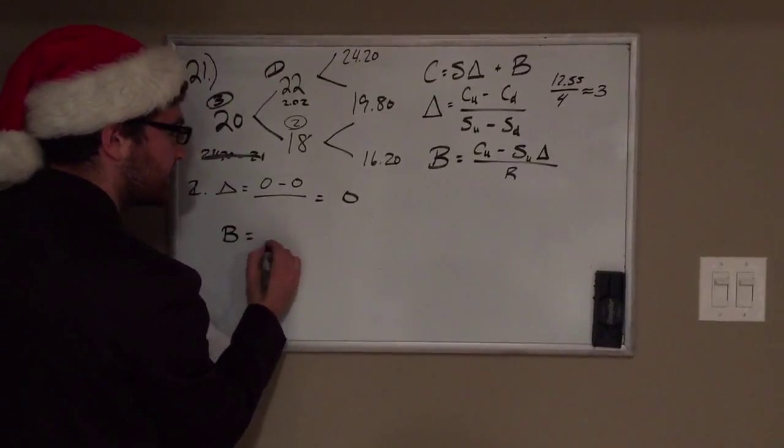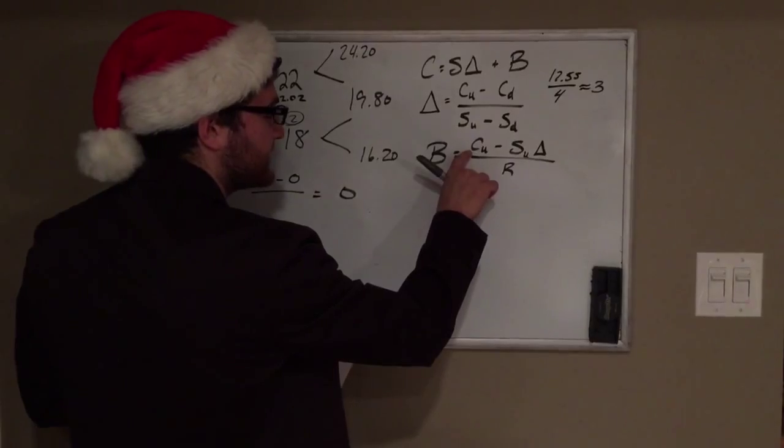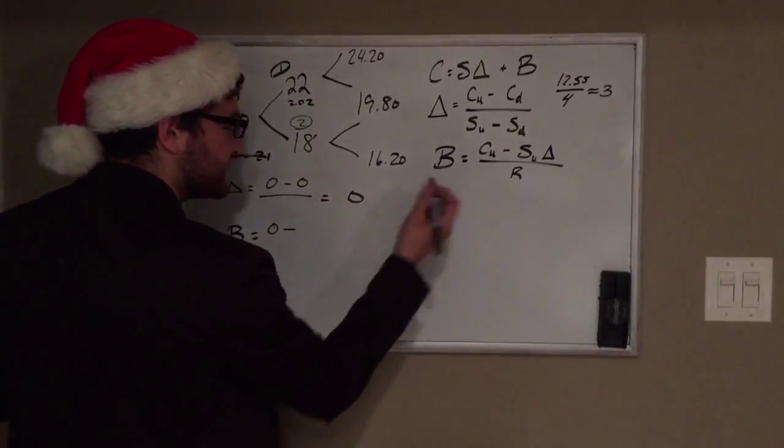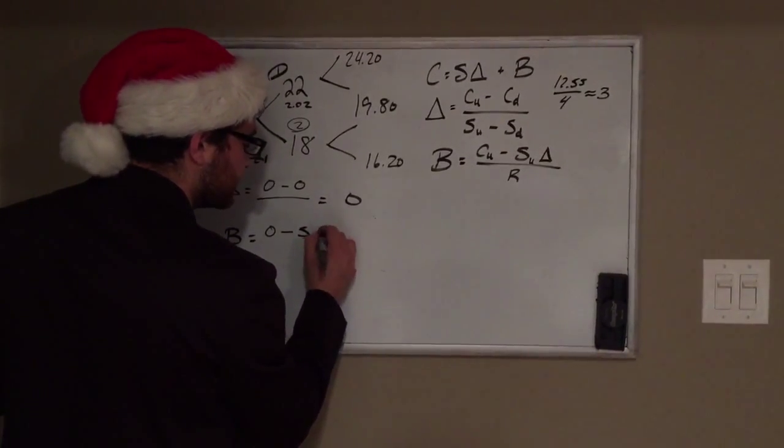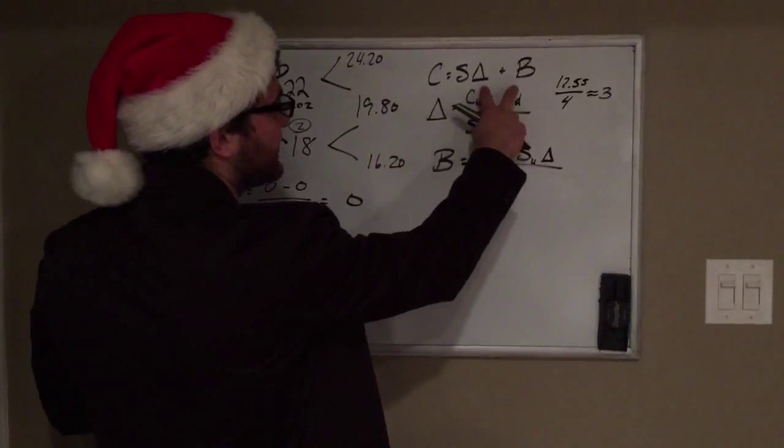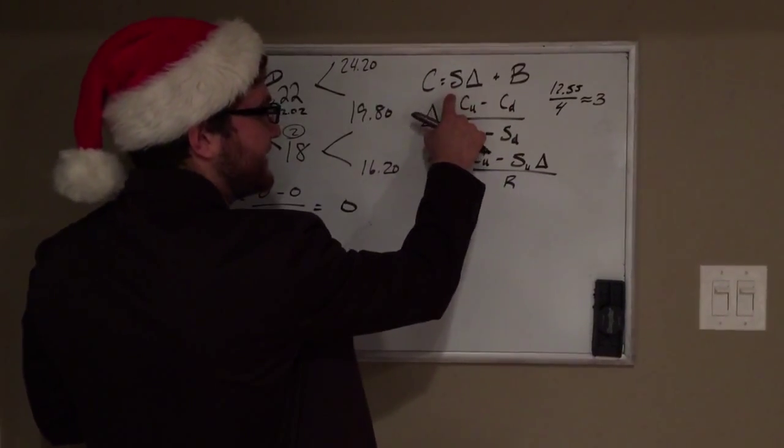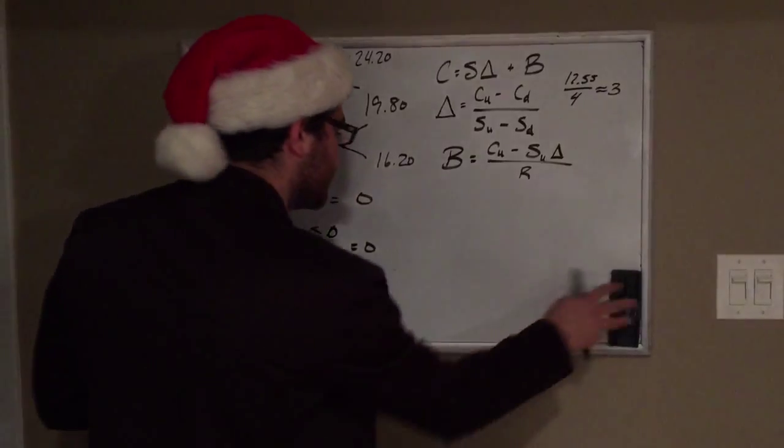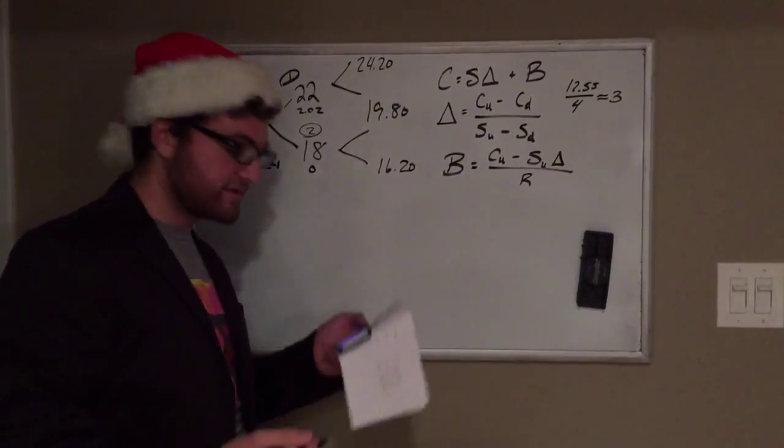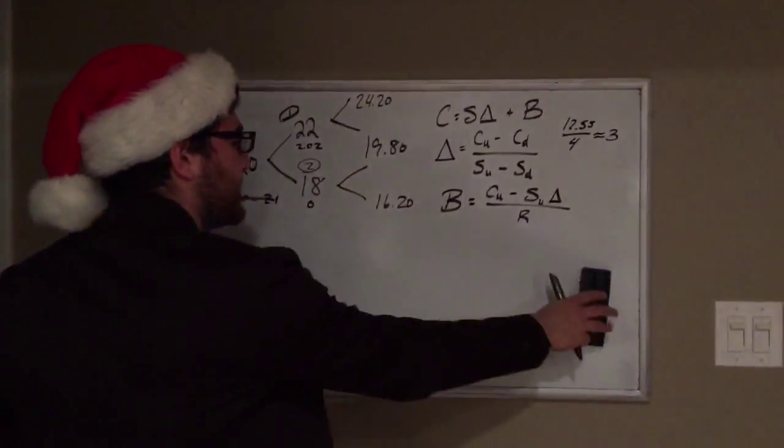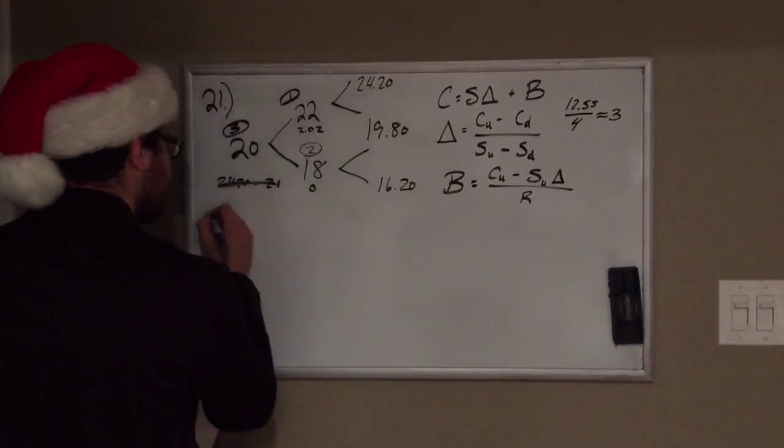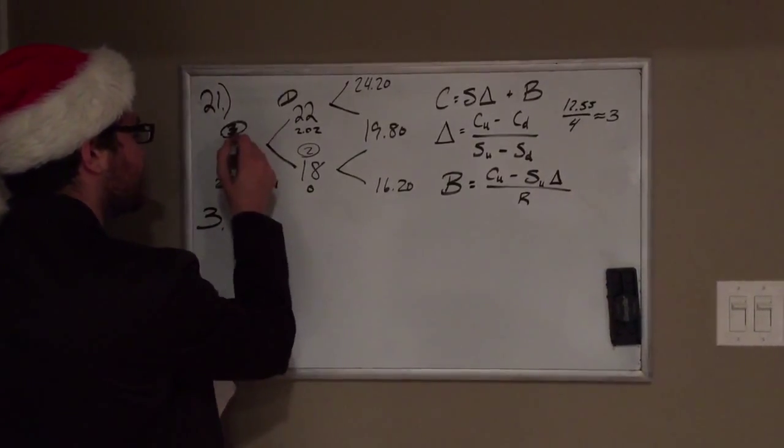So for B, it's going to be the price of the call if it goes up, which is zero, minus whatever the stock price is times the delta, which is zero. So this is going to be zero. It doesn't really matter what it is. Plug it into this formula: anything times zero plus zero equals zero. So for the second one, C is going to equal zero. Sorry I went kind of fast on that one, but you can solve it out - it's just going to equal zero in the end.